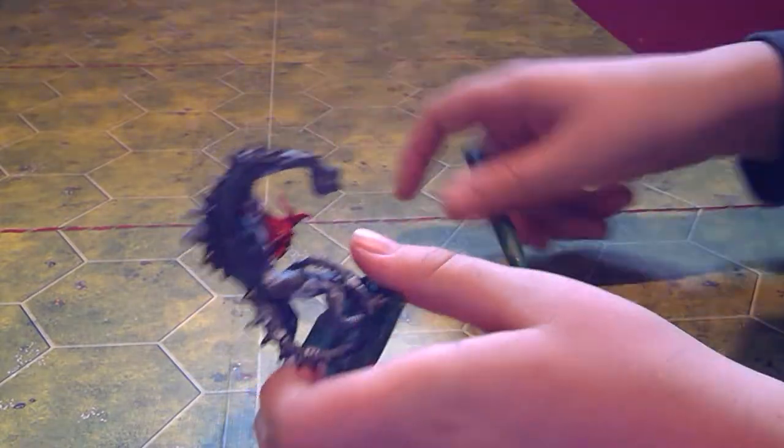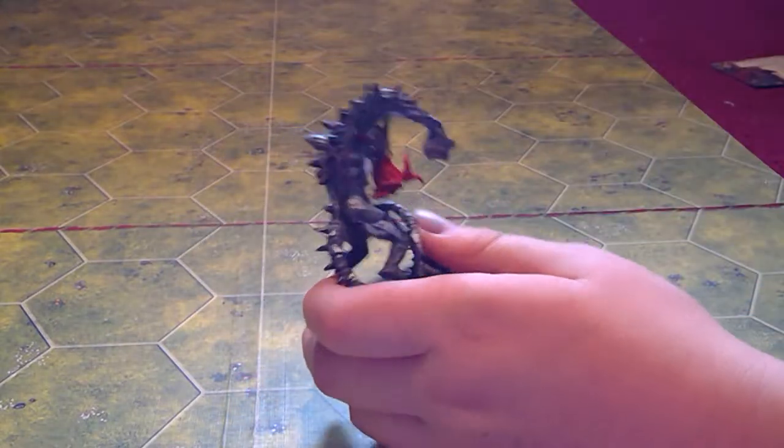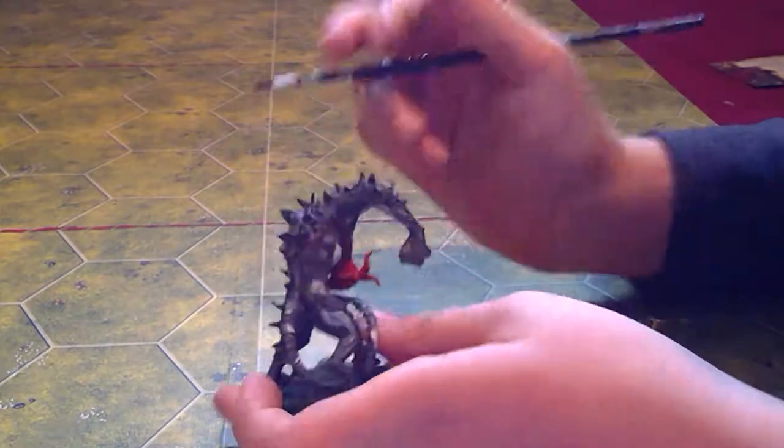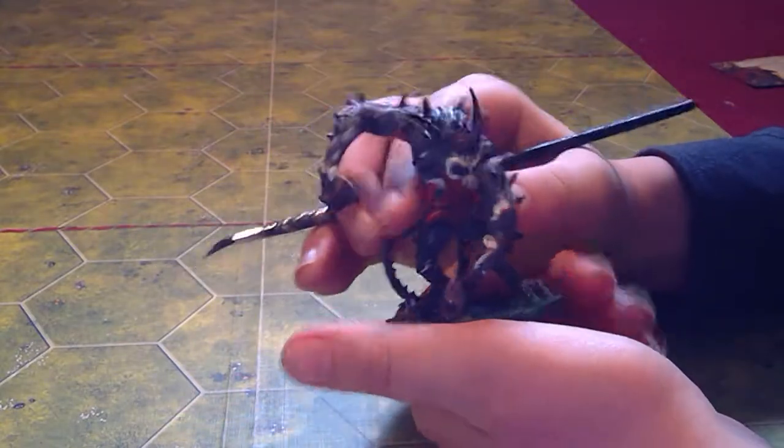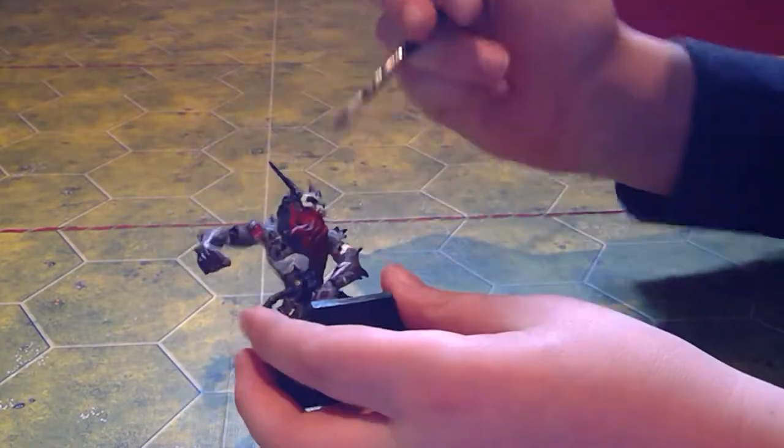Then after that, you're going to take another brush, then you'd paint all his spikes, and his horns, and his eyes.